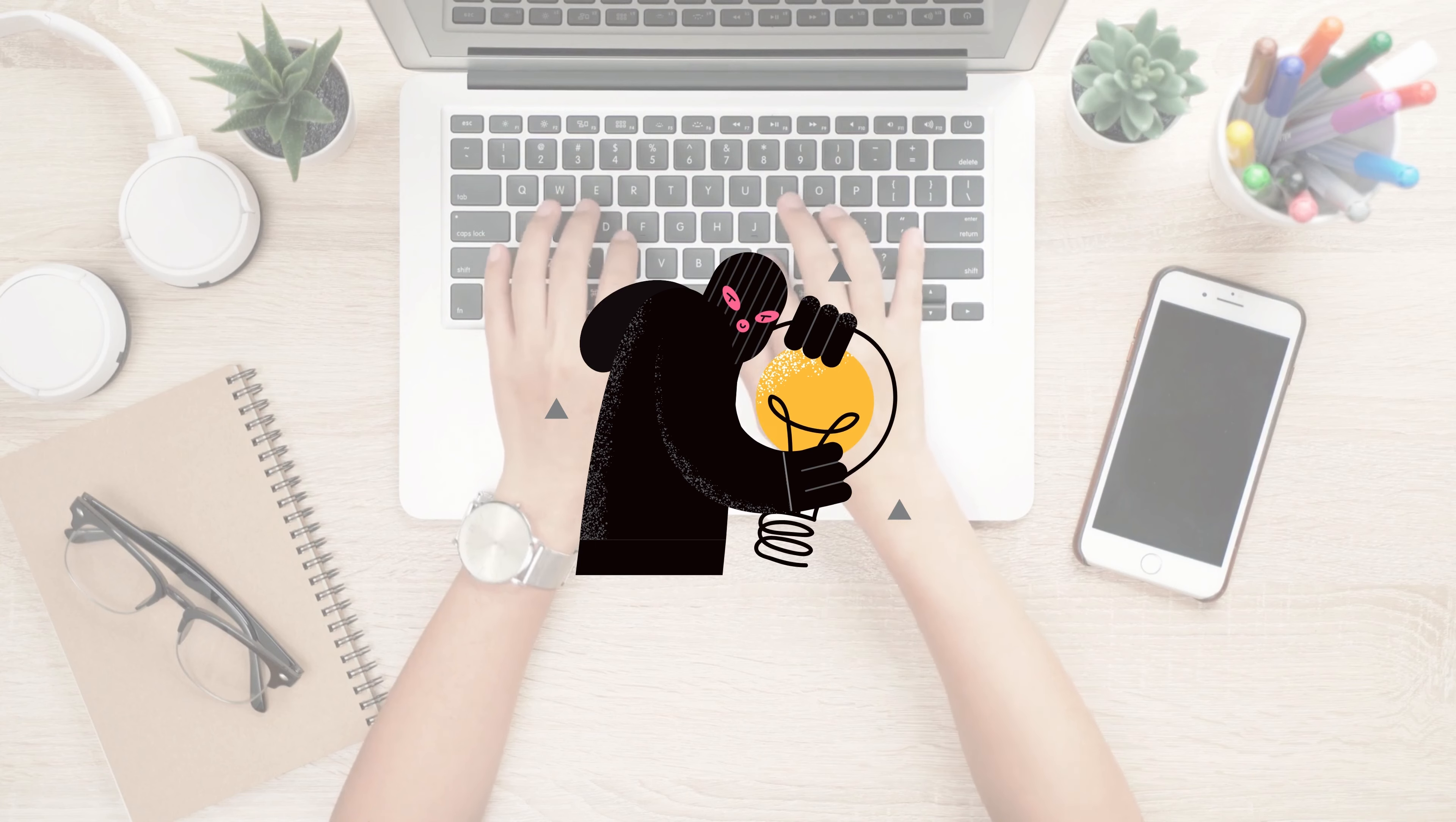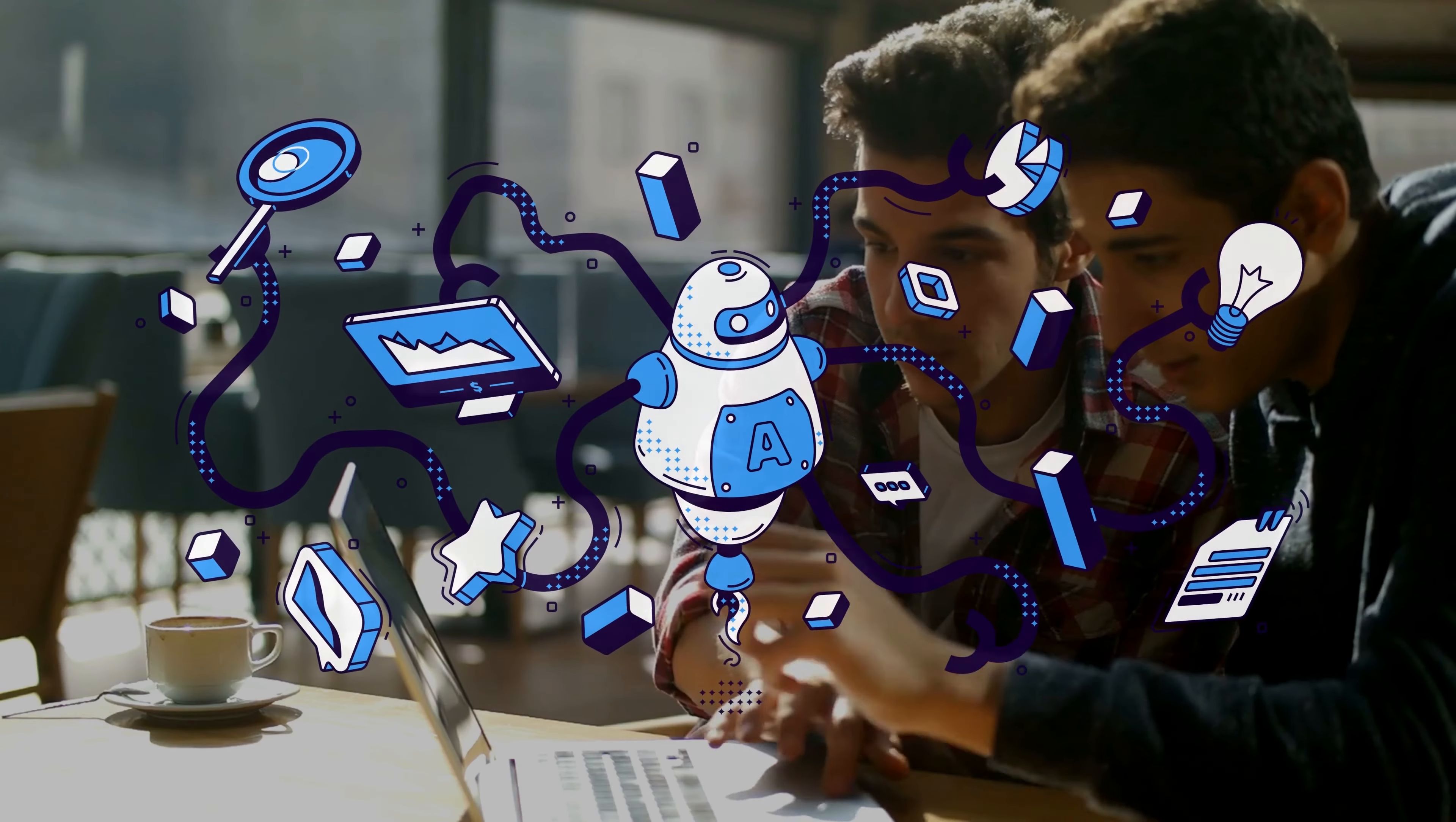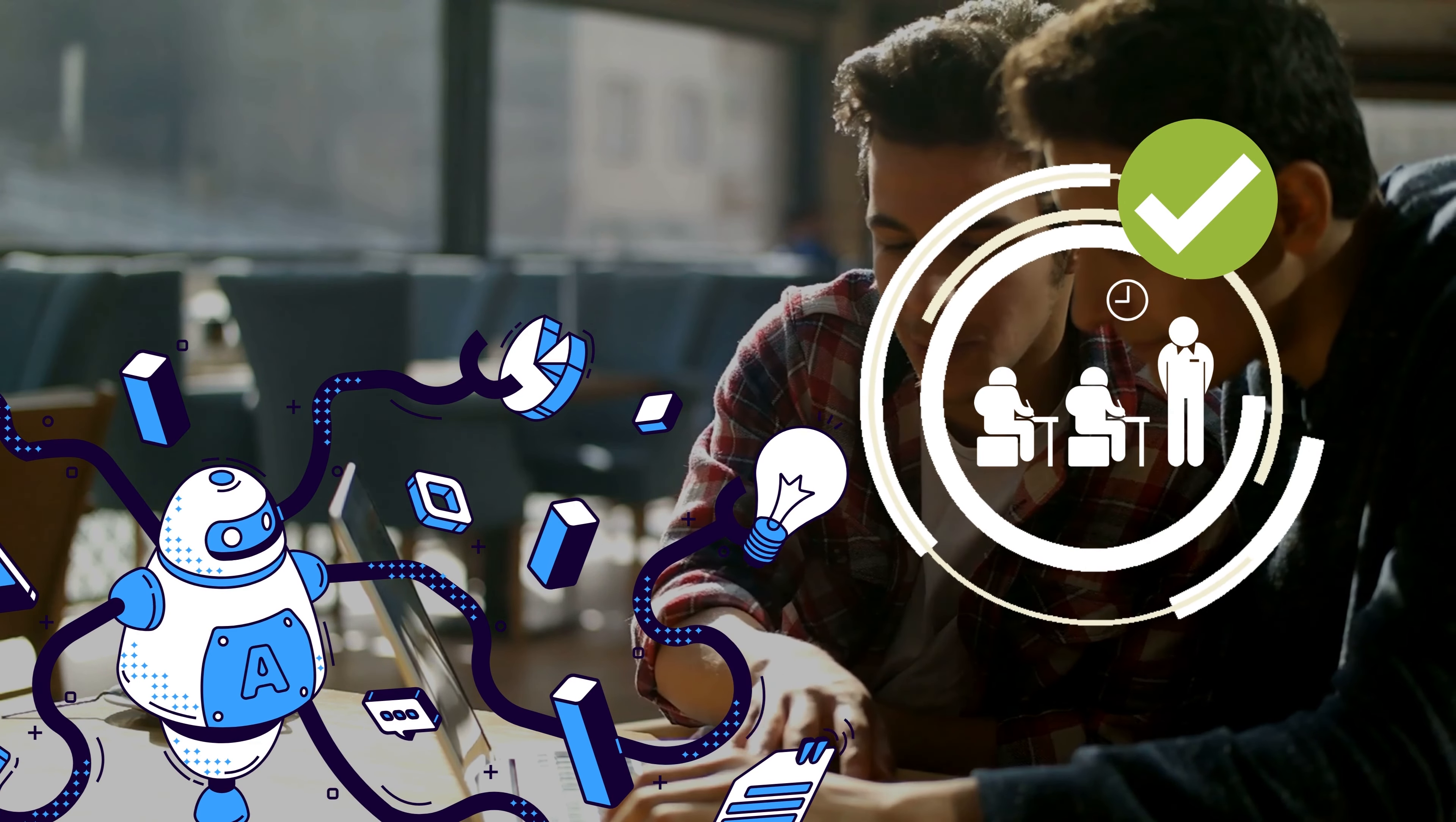One way to do this is to use plagiarism detection software, which can analyze the content of student work and identify when it has been copied or generated by a chatbot. This can help teachers to identify when cheating has occurred and take appropriate action.